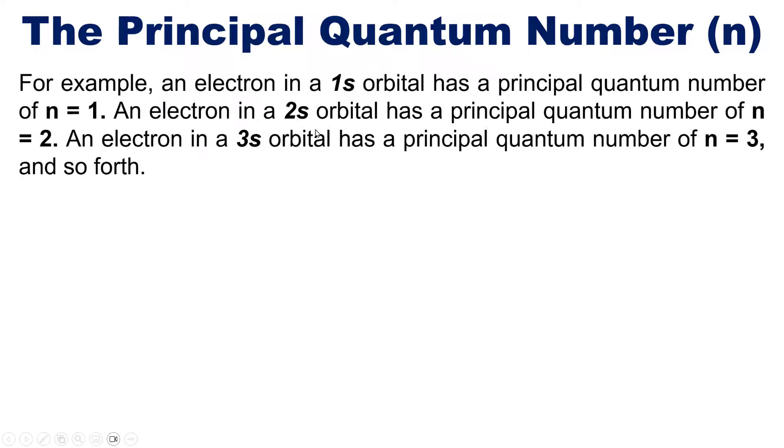For example, an electron in a 1s orbital has a principal quantum number of n equals 1. An electron in a 2s orbital has a principal quantum number of n equals 2, and an electron in a 3s orbital has n equals 3. You get the idea.